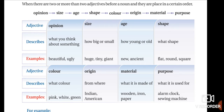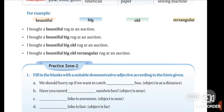Now I will tell you one example using all these adjective categories. I am taking the example of a ball. My opinion about the ball — it looks very beautiful. Size — it is very big. Age — it is brand new. Shape — it is round. Color — it is pink. Origin — I got this from Delhi. Material — this ball is made of leather. Purpose — I use this ball to play; playing is the purpose of this ball.